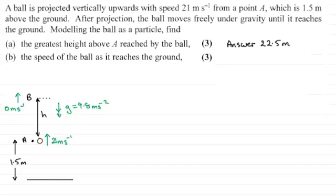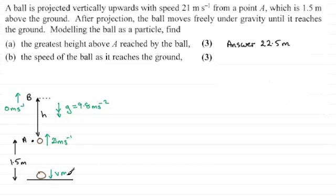So how would we do this? The ball goes from A, projected upwards, reaches its maximum height, comes to instantaneous rest, and then travels back down to hit the ground. Just before it hits the ground, it's moving with a speed of V metres per second downwards. Mark that in as V — and that's what we've got to find.